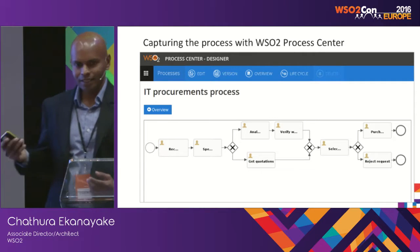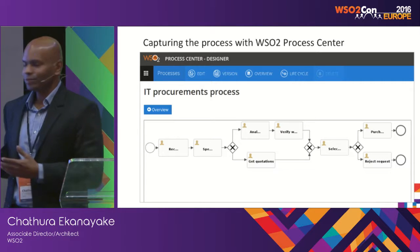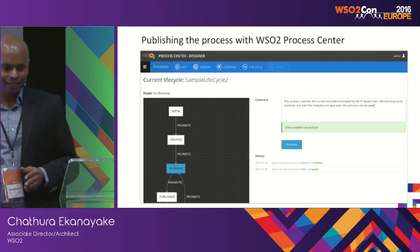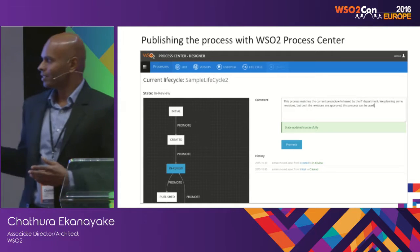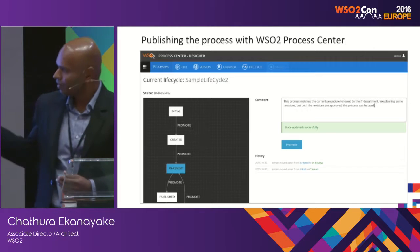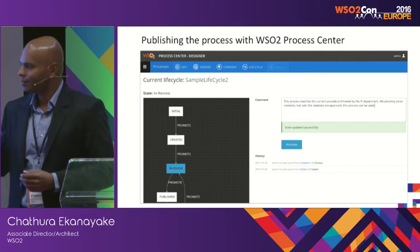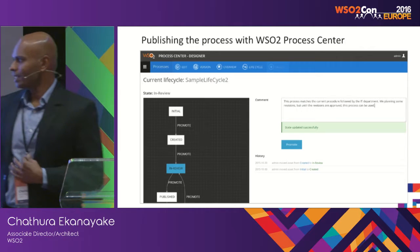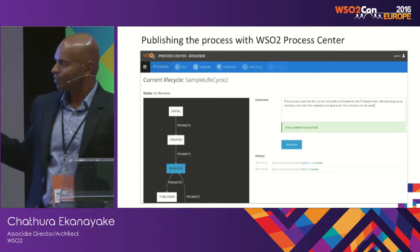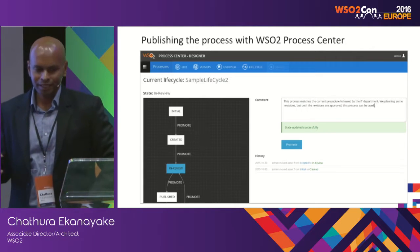Now he has documented all processes, including our air conditioner fixing process. He wants to publish it. There is a lifecycle in place — he can promote the process through the lifecycle steps. If he wants, he can configure it so that at some lifecycle stages, other people have to approve it. Like that he can go through the lifecycle and publish the process.